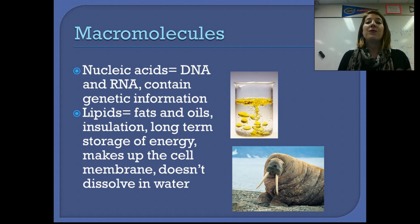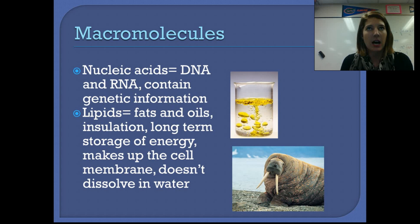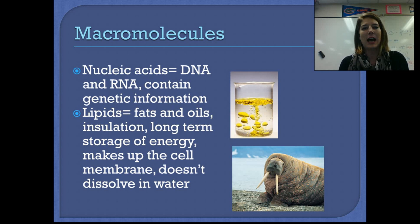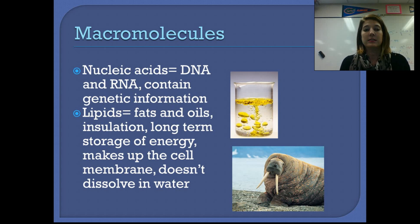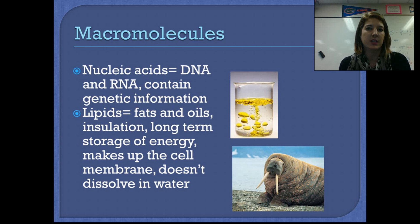We discussed the four major macromolecules that make up living organisms. Macro means big, so when we're talking about macromolecules, we're talking about lots and lots of atoms stuck together to make these giant molecules. The four main classes are nucleic acids, lipids, carbohydrates, and proteins. Nucleic acids — DNA and RNA — are what contain your genetic information. All living organisms contain DNA or RNA, and most have both. They are there as the blueprint for how to make all of the other things.